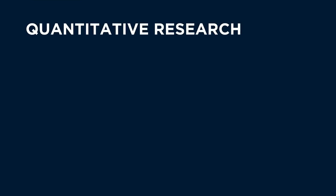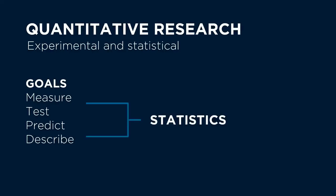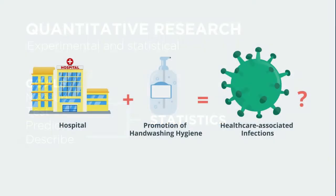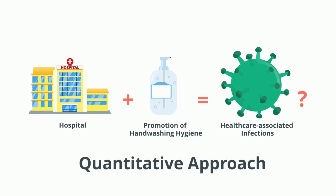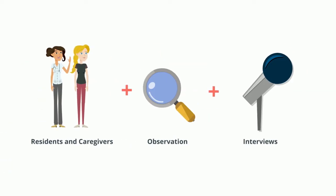When you think quantitative, think experimental and statistical. The goal here is to measure, test, predict, and describe using statistics. For example, if you conduct a statistical analysis of the correlation between a hospital's promotion of hand-washing hygiene and their rate of healthcare-associated infections, you're taking a quantitative approach.